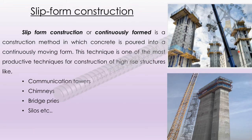Now we see slip form construction. Slip form construction, or continuously formed, is a construction method in which concrete is poured into a continuously moving form. This technique is one of the most productive techniques for construction of high-rise structures like communication towers, chimneys, bridge piers, silos, etc.